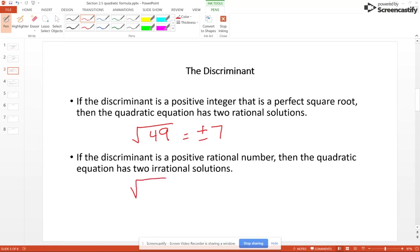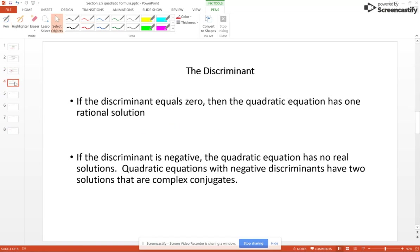If you have something like the square root of 10, which is not a perfect square root, then you're going to have two irrational solutions. Now, if your discriminant ends up to be 0, then you're going to have one rational solution, something that can be written as a fraction.